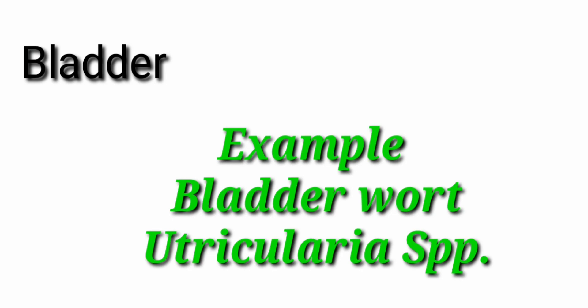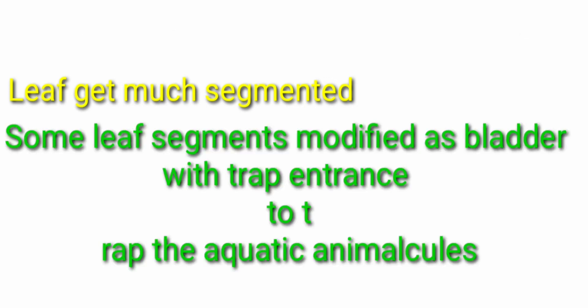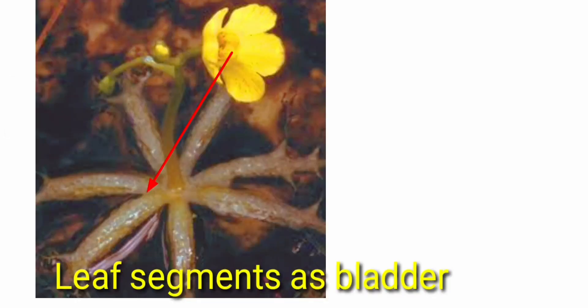Next one is the bladder. Bladder traps aquatic micro insects. This is the leaf of bladderwort.